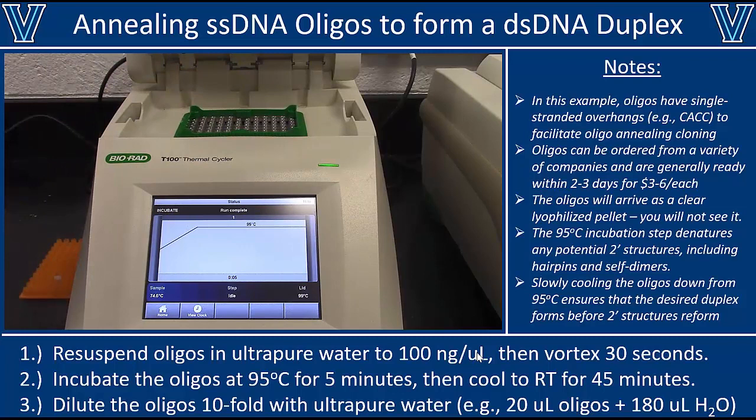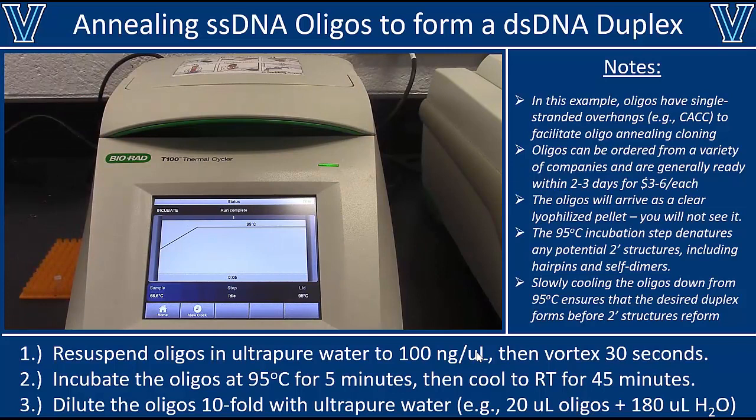At the end of 5 minutes, the thermal cycler will beep, and you should immediately take the tube out of the block — because the thermal cycler will instantly start cooling the sample down to room temperature as soon as the run is finished, and we don't want that. We want the sample to slowly cool down so the duplexes have ample time to form before other secondary structures form. If you cool it too rapidly, you might get a mixture of duplexes and secondary structures. The best approach is to remove the tube from the thermal cycler, put it in a rack, and leave it there for about 45 minutes.